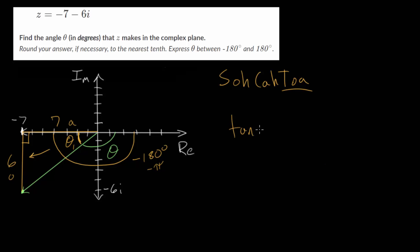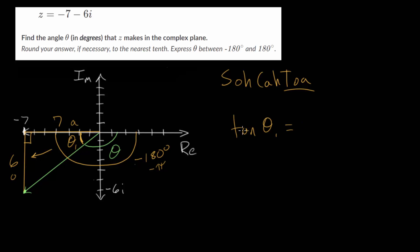We can say that the tangent of theta1 is equal to the ratio of the opposite side, which is 6, divided by the adjacent side, which is 7. To figure out what theta1 is, we would need to take an inverse tangent of each side,